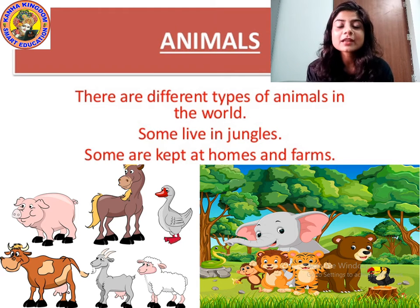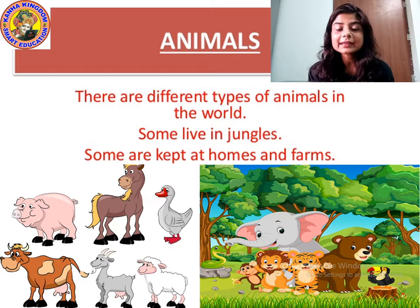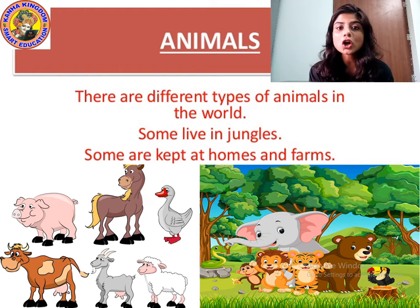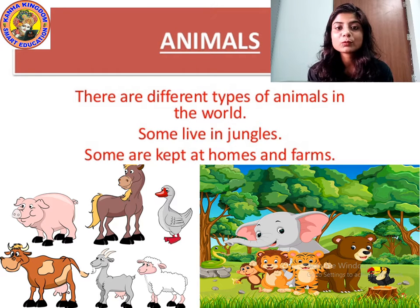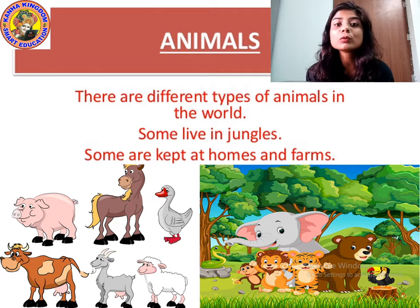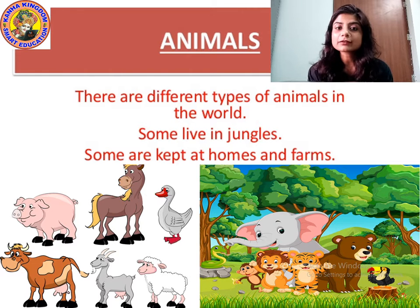Some animals we keep at home. Which animals do we keep at home? We keep cat, dogs — though hens are not kept at home, they are kept in farms. But like dogs, cats, parrots, and rabbits are some animals kept at home. We pet them, and those are called pet animals, whom we keep at home along with us. Some are kept at home and farms.